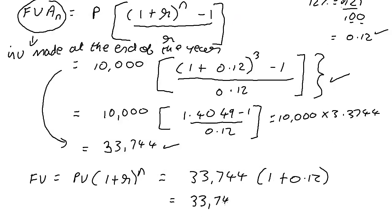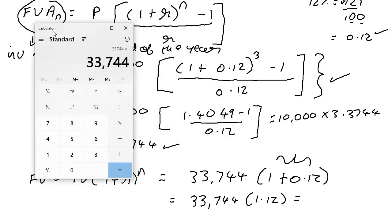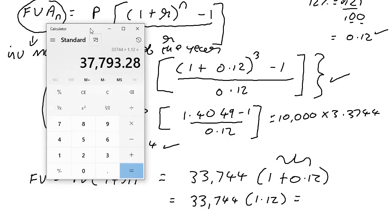I already have that in the calculator. If you simply add these two up on the calculator, you're going to get 1.12. And by multiplying 33,744 into 1.12, I will get the final answer, which is 37,793.28.